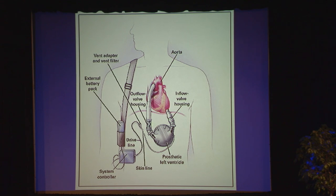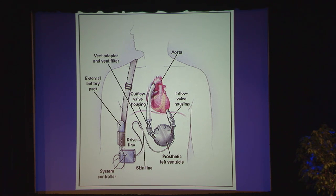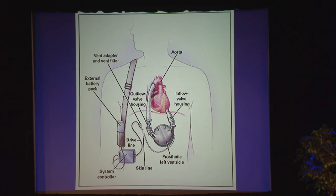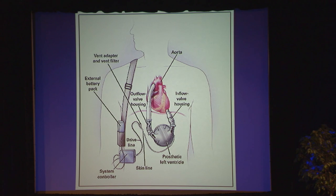This is the first LVAD that really made it to market in any meaningful sense — the old HeartMate XVE. The blood goes from the left ventricle into this device, gets pumped out to the aorta. This is all internal until this point where this driveline, about the thickness of a pencil, exits the body, hooks up to the system controller — that's the computer that runs the pump — and then is hooked up to two battery packs.